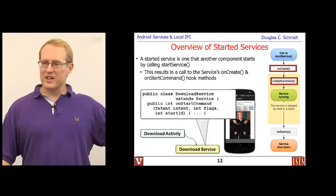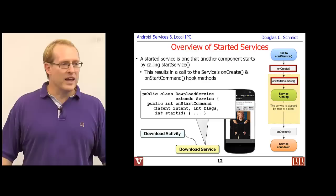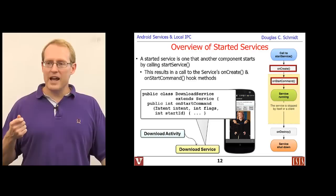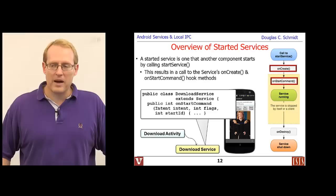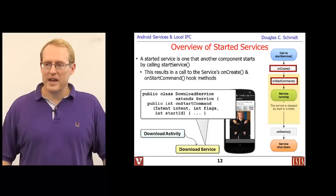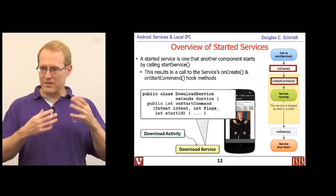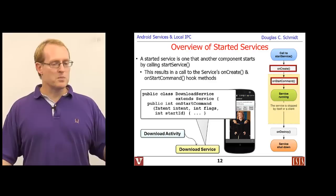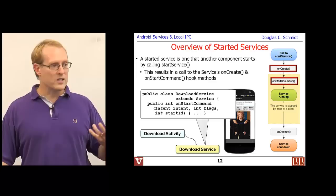When you call startService() and pass in an intent, Android figures out which service needs to run, launches it if necessary, and then delivers the intent by calling a predefined hook method called onStartCommand(). The onCreate() of the service is called first to initialize it, and then onStartCommand() is called, which passes in the intent along with other data — that's how you find out what the client wants to happen.